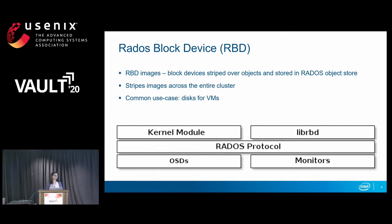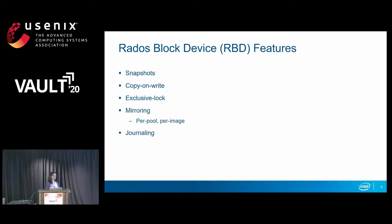These images are thin provisioned and resizable. Because they are striped across the cluster, they do not have a single point of failure. They offer multiple features like snapshotting, copy-on-write, exclusive locking, and mirroring support per pool or per image. Mirroring is handled by the RBD mirror daemon, which uses journaling as a prerequisite to implement it.